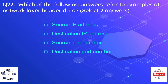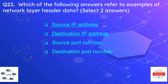Question number twenty-two is: which of the following refers to examples of network layer header data, or layer three header data? Select two answers. The options are source IP address, destination IP address, source port, and destination port. The answer is source IP address and destination IP address. Source port and destination port are layer four transport layer header data.